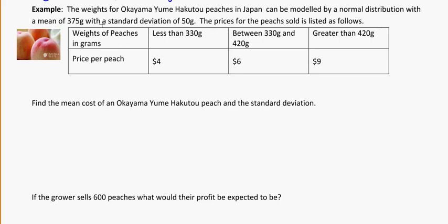So here we have the weights of peaches in their grams, less than 330, between 330 and 420 and greater than 420 and the price that they'll charge you for each peach. So the small ones obviously less expensive and the large ones more expensive. So the first question here is, find the mean cost of the peach and the standard deviation. And so when I see mean there, I should probably be thinking, oh this might be looking at expected value.